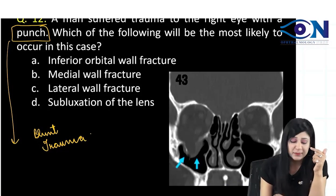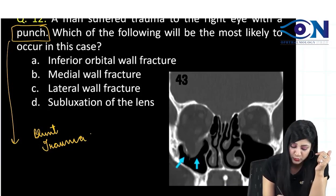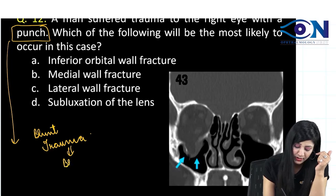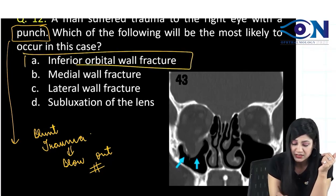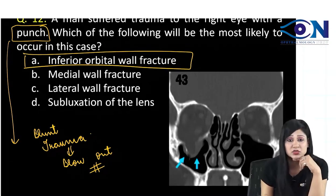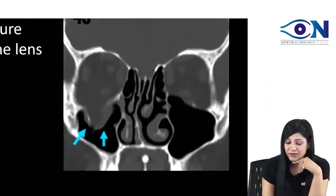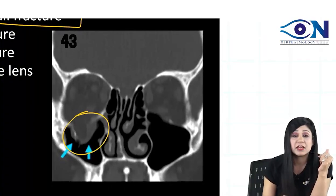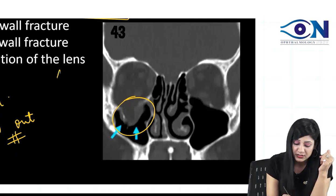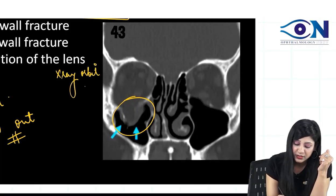Punch is occurring due to blunt trauma. Most commonly this fracture is called the blow-out fracture, and the blow-out fracture is most common in the inferior wall. The investigation of choice here is the X-ray orbit, and the view that we are going to do here is the Water's view.